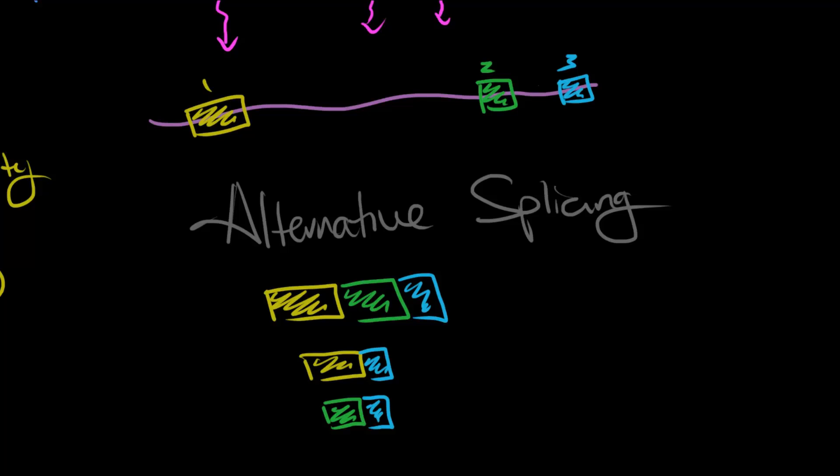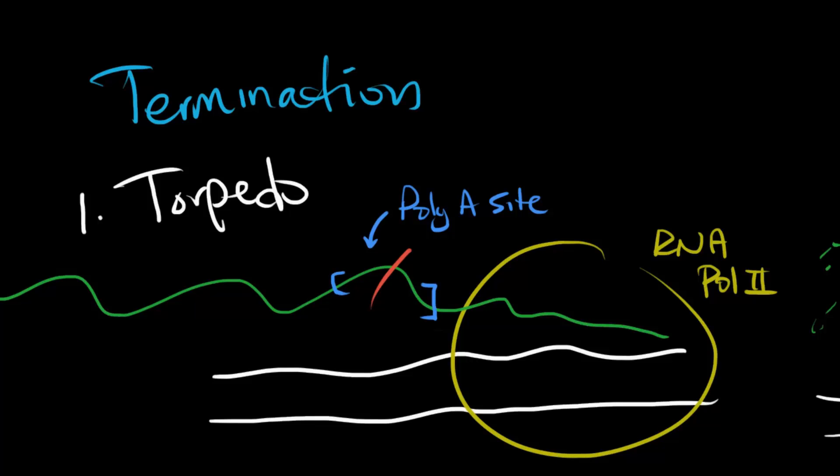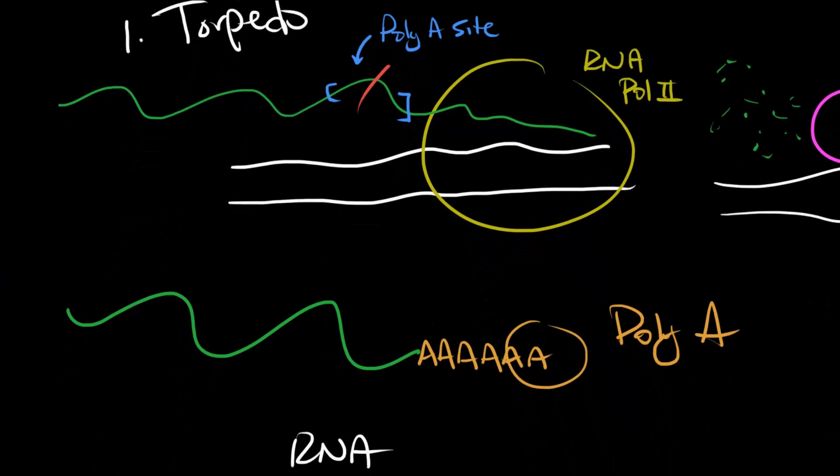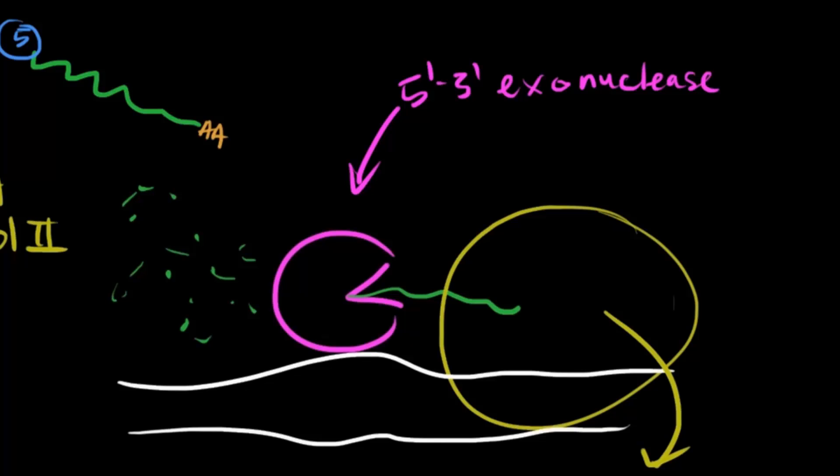The last step is to add a poly-A tail. This step can be clumped together with termination. There are two models for how this works. The first is called the torpedo model. When the desired mRNA has been synthesized, there will be a sequence transcribed called the poly-A site. This poly-A site triggers an endonuclease to cut there, to which polymerase A then adds about 200 A's to the newly formed 3' end. The newly made 5' end doesn't have a cap, so an exonuclease starts to digest the RNA until it catches up with the polymerase, to which it then kicks off, terminating transcription.